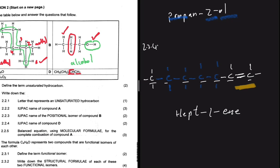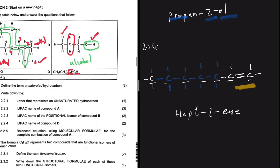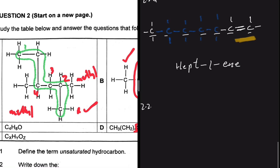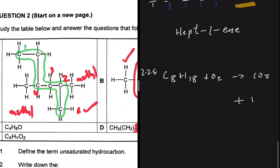For 2.2.5, we write a balanced equation for the complete combustion of compound A. Compound A has eight carbons — six on the longest chain and two as branches. Using the alkane formula CnH(2n+2) with n = 8, we get 18 hydrogens. So the unbalanced equation is C8H18 + O2 → CO2 + H2O.